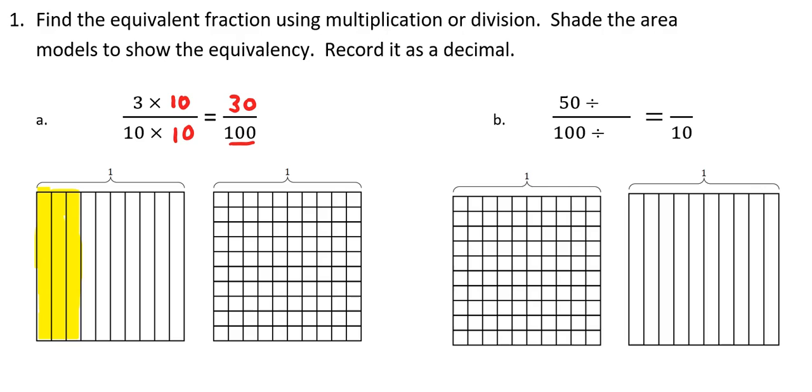So now let's shade in 30 hundredths on the second model. You can see that both models have the exact same amount shaded in. That means in decimal form, I can say that 3 tenths is equal to 30 hundredths.